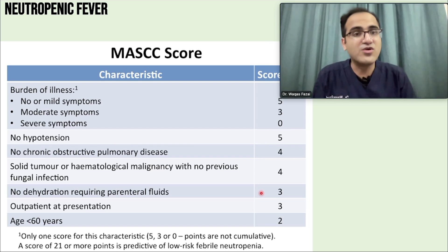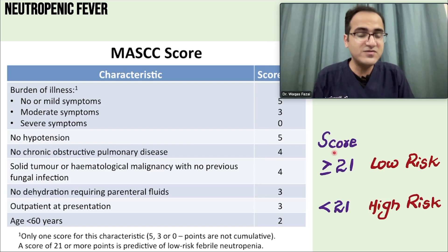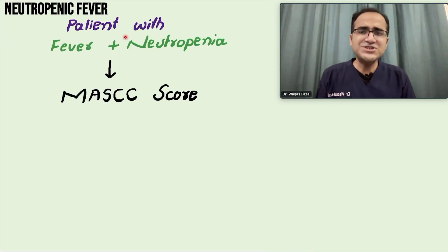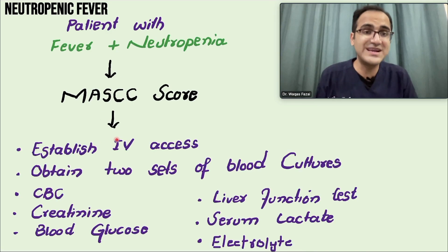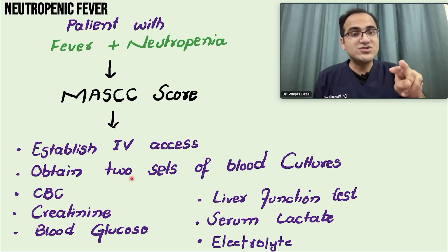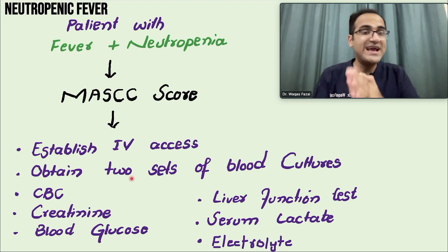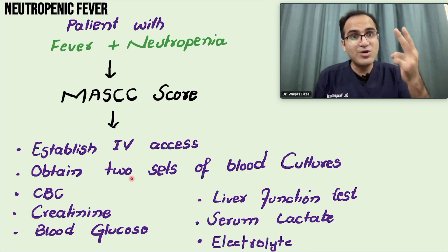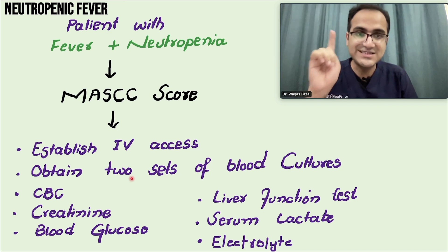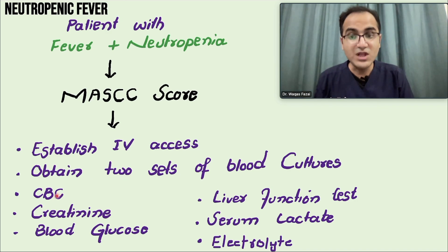If the MASCC score is greater than or equal to 21, that is a low risk patient. If the score is less than 21, that is a high risk patient. With fever and neutropenia, after doing the MASCC score, the next step is to order relevant investigations. Establish IV access, obtain two sets of blood cultures — two aerobic and two anaerobic samples.